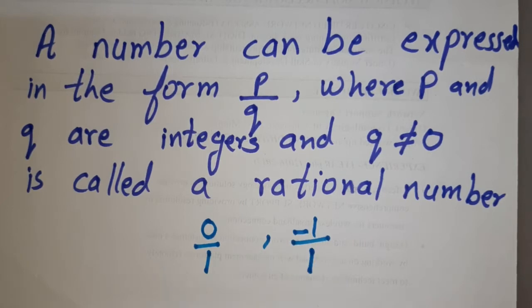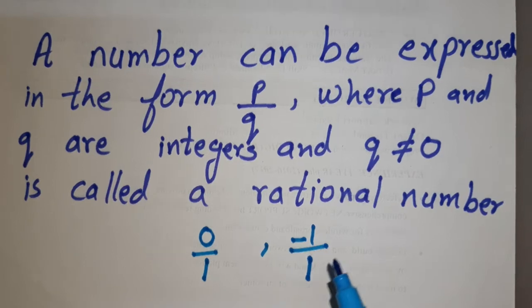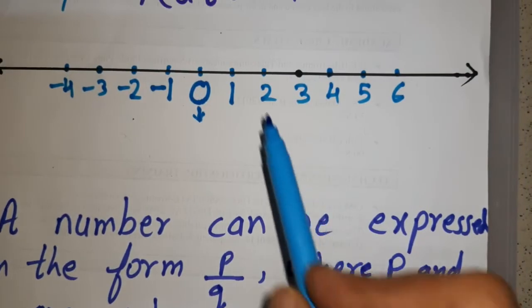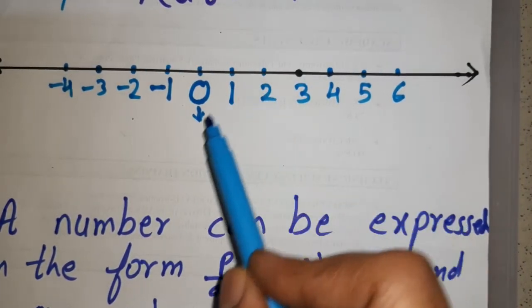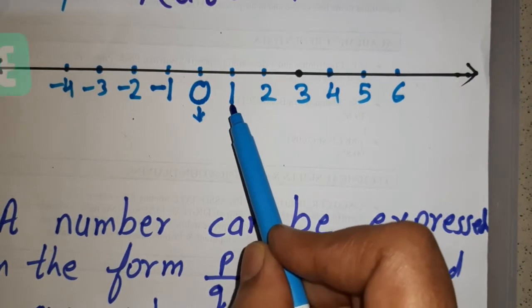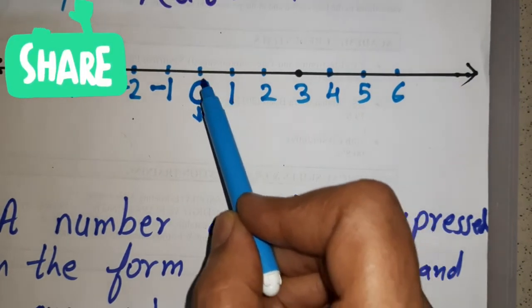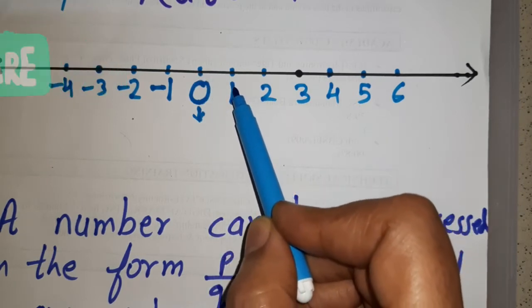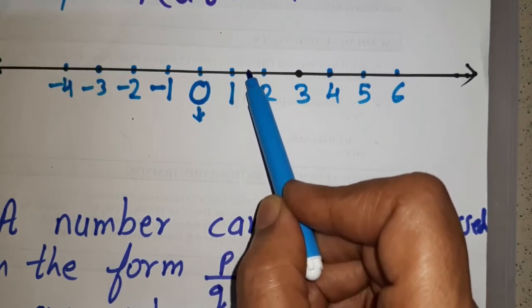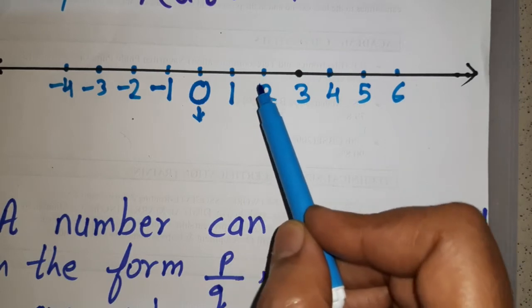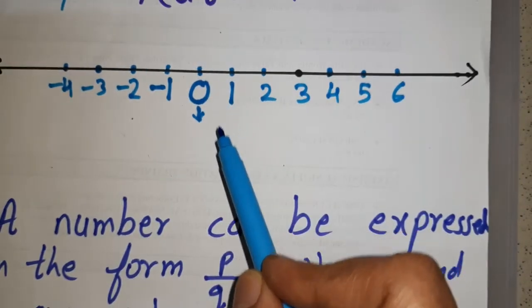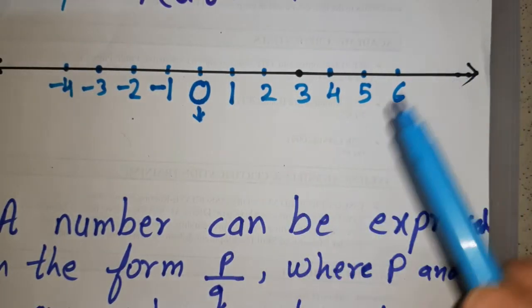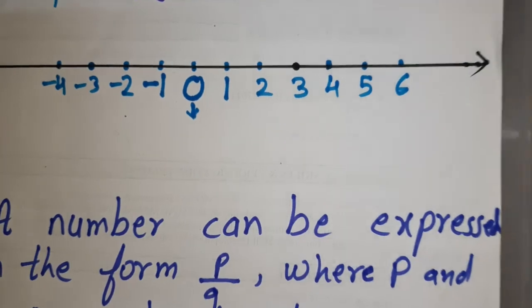We can represent rational numbers on the number line because infinite numbers lie between one and two. For example, I can eat half a chapati, which lies between zero and one. If I take one and a half chapatis, it lies between one and two. So there are infinitely many rational numbers between any two rational numbers, which we are going to learn ahead.